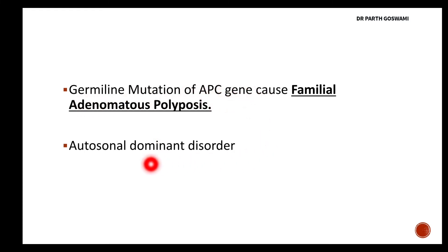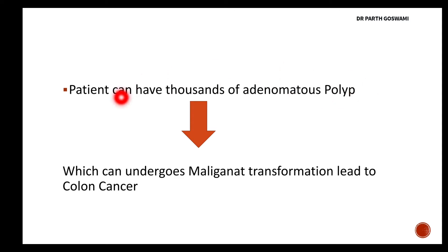If you have a germline mutation in the APC gene, you can develop an autosomal dominant disorder in which you will have thousands of polyps — particularly gland-forming adenomatous polyps — in your colon. This is known as familial adenomatous polyposis. The main danger of this disorder is that these benign adenomatous polyps can gradually get converted into malignancy, and you can develop colon cancer.